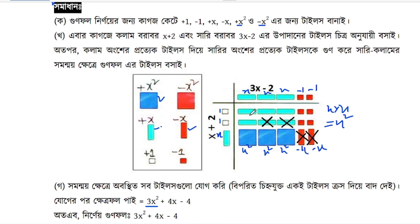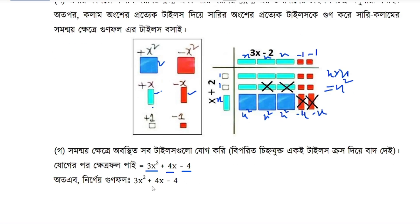And I can cut the tiles as a 2 square, 3 square, 6 square. More, plus is plus. So I'm plus 4x. So minus 1 squared: 1, 2, 3, 4. So minus 4. So this is 3x squared plus 4x minus 4.